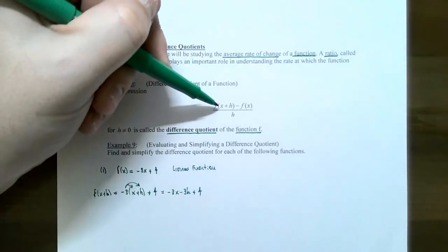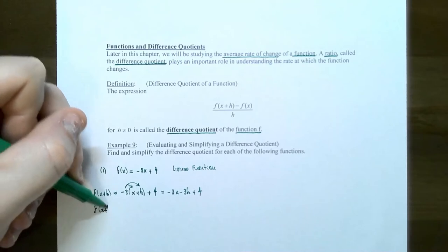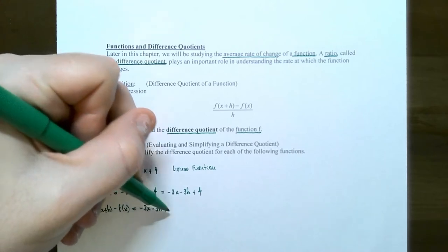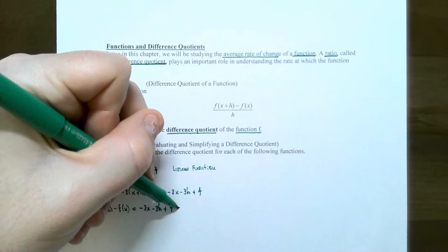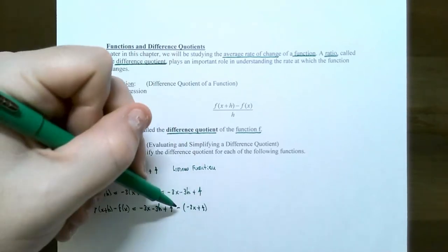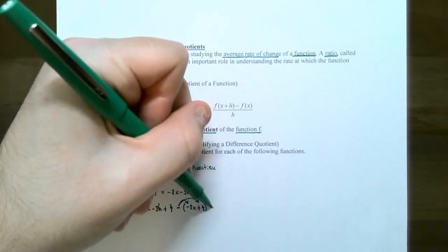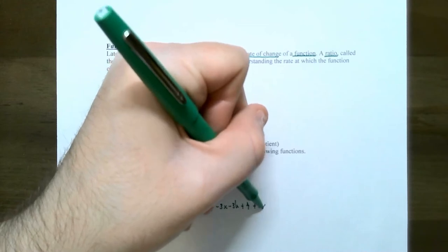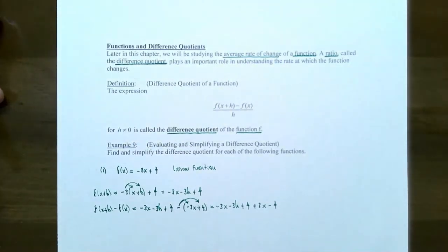You can distribute the negative 3 to both terms inside the parentheses and get negative 3x minus 3h plus 4. Now the next part: take this answer and subtract the original function. So f of x plus h minus f of x. Drop in our answer: negative 3x minus 3h plus 4. Be very careful — there's a minus sign in front of the entire function, so f of x must go in parentheses: subtract (negative 3x plus 4). Distribute the negative sign to both terms, changing the signs: plus 3x minus 4.